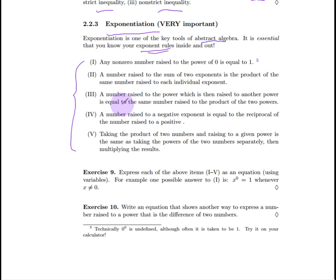And here's a list of exponent rules. And what you need to do in exercise nine is write each rule as a general equation. For instance, look at part one. Any non-zero number raised to the power zero is equal to one. So, what's a general equation that expresses that property? Well, it means that if I take any x and raise it to the zero power, it's equal to one as long as x is unequal to zero.